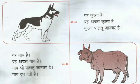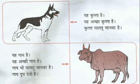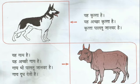Gai Hai — this is a cow. Achchi Gai Hai — it's a good cow. Gai bhi Paaltu Janvar Hai — cow is also a domestic animal. Gai Doodh Deti Hai — cow gives us milk. New words from these two pictures: Kutta means dog, Achcha means good, Paaltu Janvar means domestic animal, Gai means cow, Doodh means milk.